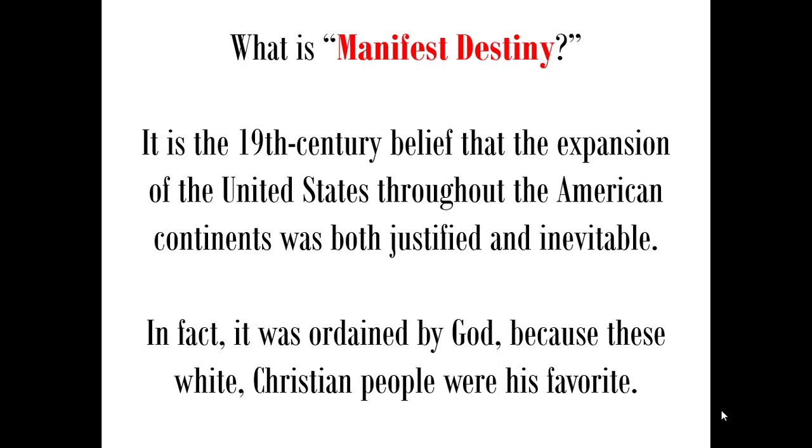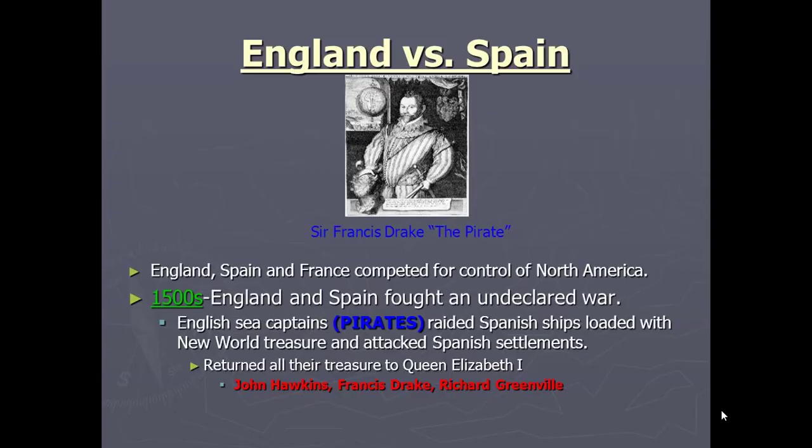To properly set up the two colony types founded in what would become the United States — plantation and neo-European — we need background on Spain versus England. These two countries would compete for control of North America. In Europe, Spain fought with England over power, wealth, and religion. The Protestant faith became popular in England, creating a conflict between Catholics and Protestants that still continues in places like Ireland. Europe had become a confusing society, bickering over religion and power, led by incompetent or cruel leaders chosen by birthright alone.